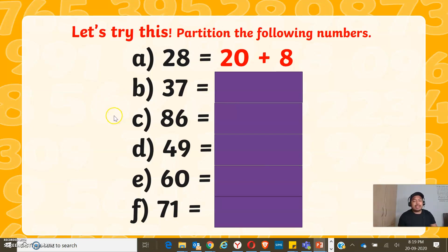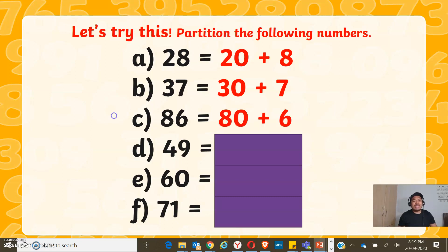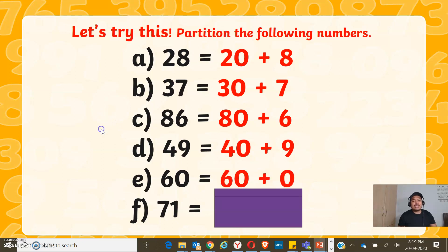Now time is up. Let's reveal and assess your answer. 37 is equal to 30 plus 7. 86 is 80 plus 6. 49 is made up of 40 and 9. 60 is 60 plus 0. And 71 is made up of 70 plus 1.